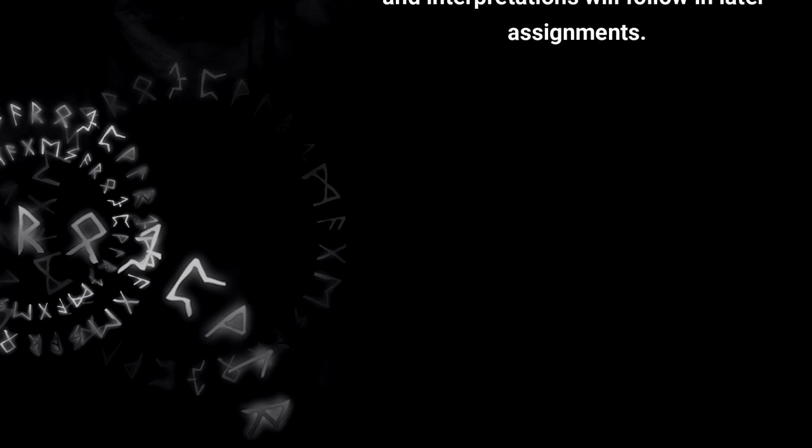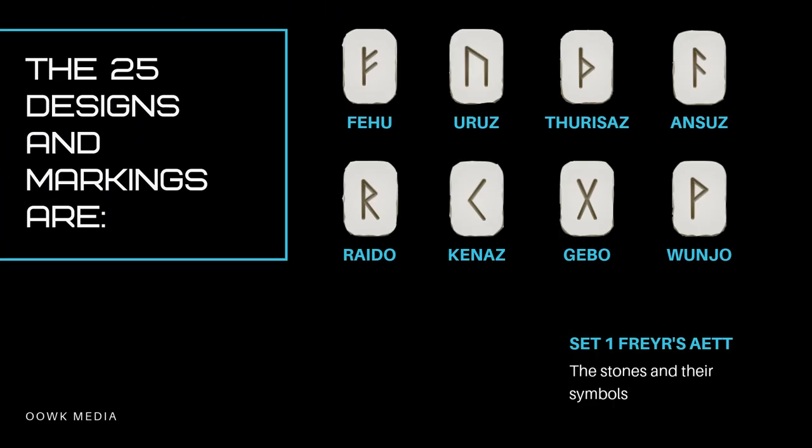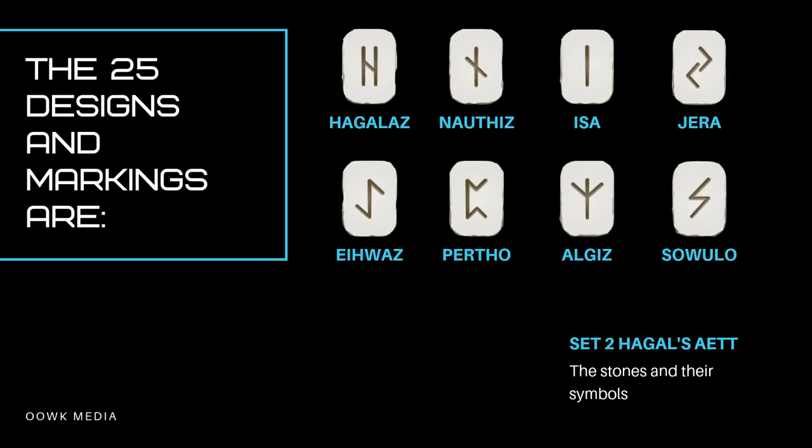Names, messages, and interpretations will follow in later assignments. The 25 designs and markings are: Set 1 — Freyja's aett: Fehu, Uruz, Thurisaz, Ansuz, Raido, Kenaz, Gebo, Wunjo. Set 2 — Hagal's aett: Hagalaz, Naudhiz, Isa, Jera, Iwaz, Perthro, Algiz, Sowilo.